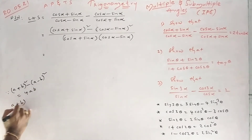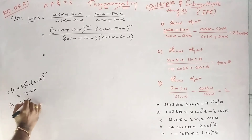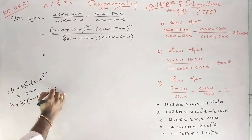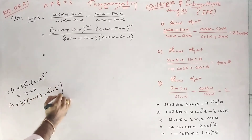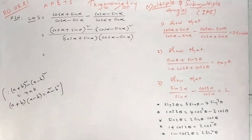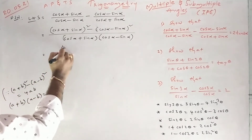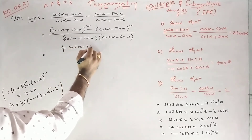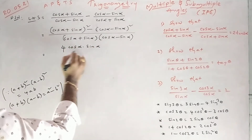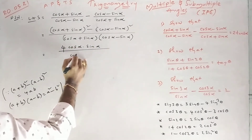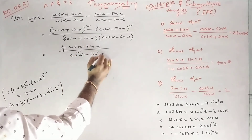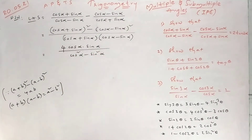The denominator is in the form of (A + B)² minus (A − B)², which will be cos²α − sin²α.